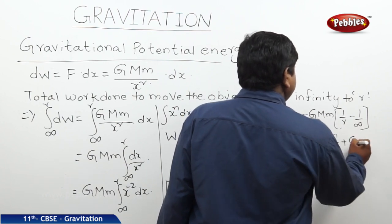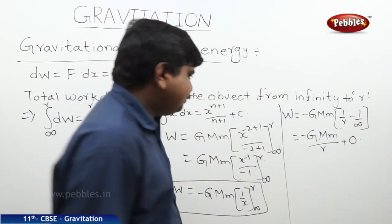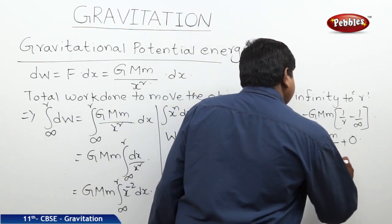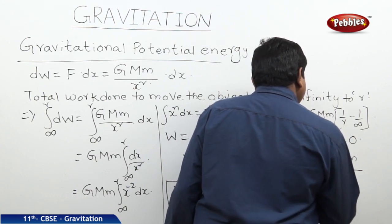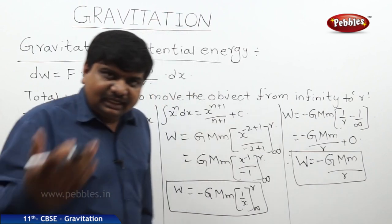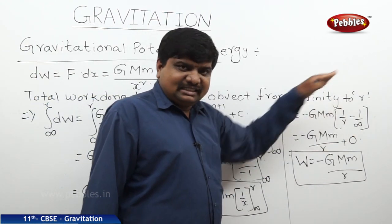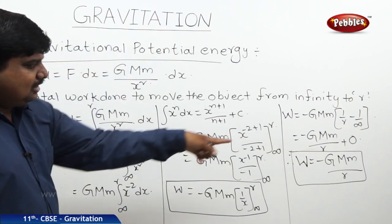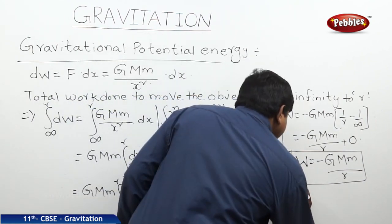Since 1/infinity equals 0, applying the limits gives W = −G·M·m/r. The work done in moving a body from infinity to a distance r is stored in the form of potential energy. Therefore, the expression for gravitational potential energy is −G·M·m/r.